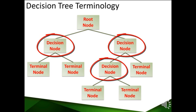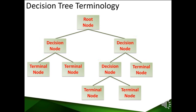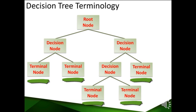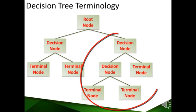The last nodes of the tree — that is, the nodes that are not split any further — are called the terminal nodes. They are also denoted as leaf nodes. A subsection of the entire tree is called a subtree.